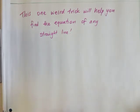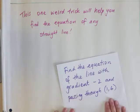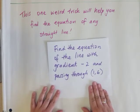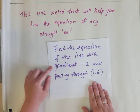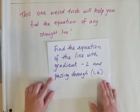Here's a question that you might get. It says find the equation of the line with gradient -2 and passing through (1, 6).